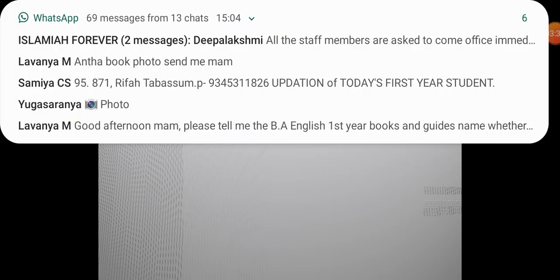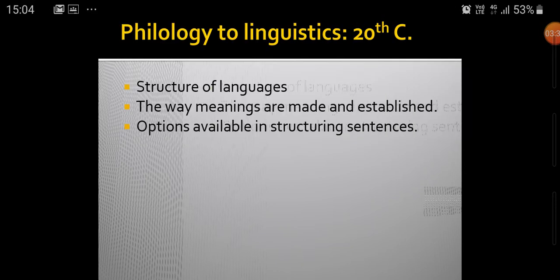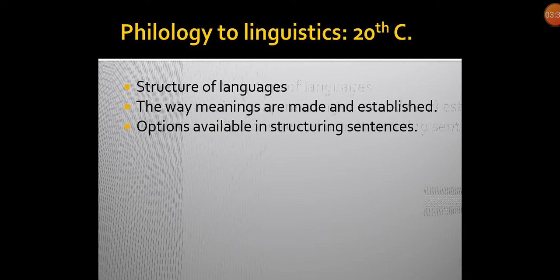This rhetoric-to-philology transition, which seemed to be a part of 19th-century philological practice, over time changed into pure linguistics, which was mainly concerned with the structure of languages. You could also say that structuralism had its basis in this kind of linguistics — more than philology, it was this hard linguistics of the 20th century that structuralism, and later post-structuralism, was concerned with. The way meanings are made and the options available in structuring sentences — this is what the linguists of the 20th century were concerned with.